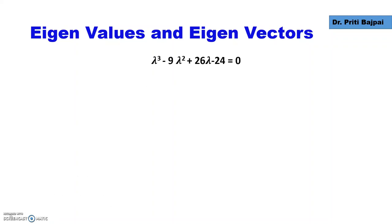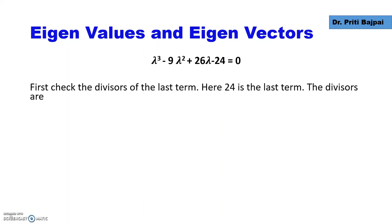Substituting these values into the equation gives us: lambda cubed minus 9 lambda squared plus 26 lambda minus 24 equals 0.